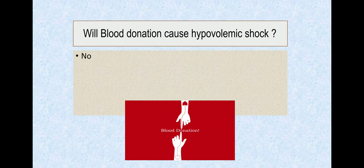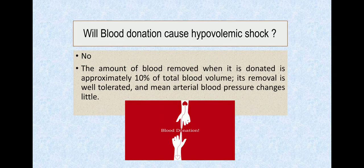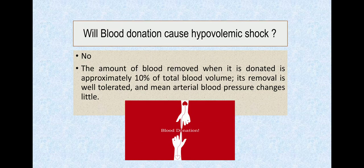Because the blood volume you donate is just 10% of the total or even less. This amount is well tolerated by the body; mean arterial pressure won't change. What's not tolerated? More than 30% blood volume—that's severe shock. At 20-30%, shock stages start: reversible shock, then progressive shock, then irreversible refractory stage. So normal blood donation is not a problem.